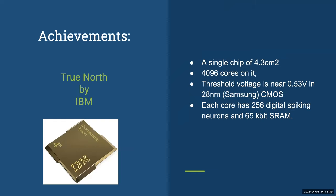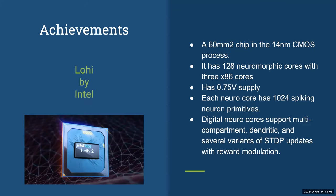An achievement of brain-like chips is TrueNorth by IBM, which is a single chip with 4,000 cores. The threshold voltage is near 0.53 volts, and each core has 256 digital spiking neurons and 65 kilobyte SRAM. Another achievement is Loihi by Intel, which is a 16 square millimeter chip with 128 neuromorphic cores. TrueNorth is used in many different circumstances and is considered more user-friendly.